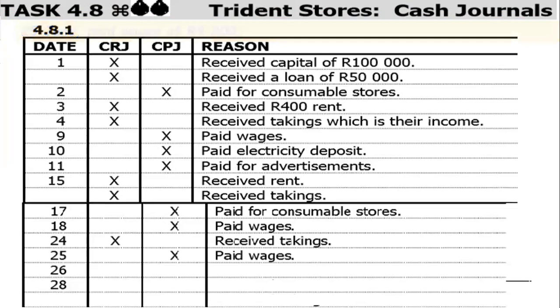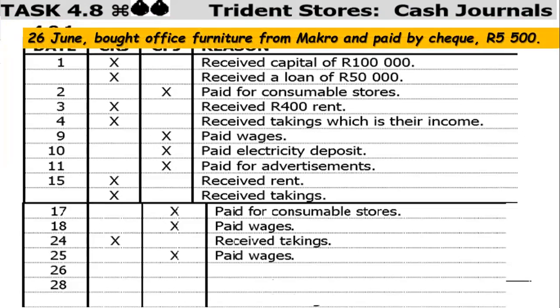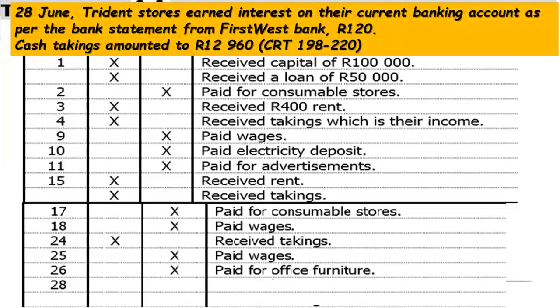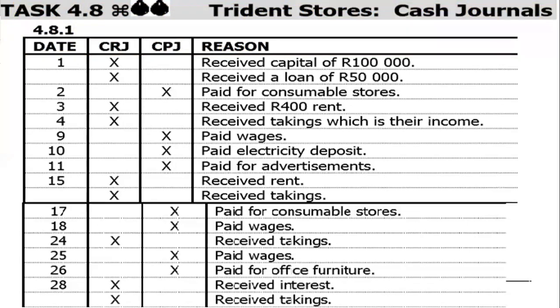On the 25th of June, a payment amounting to 4,200 rands was made — another CPJ entry. On the 26th of June, they bought office furniture from Macro and paid by check: 5,500 rands — CPJ. On the 28th of June, there are two transactions: interest on their current banking account from First West Bank amounting to 120 rands — money received, so CRJ — and cash takings amounting to 12,960 rands — also CRJ. We've now completed the analysis of all transactions.